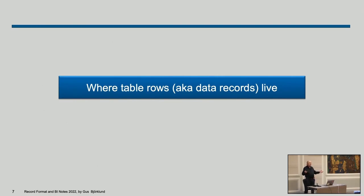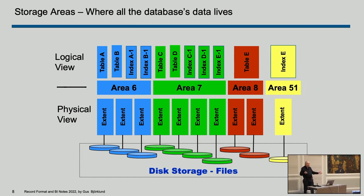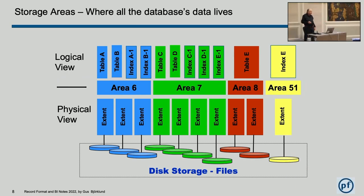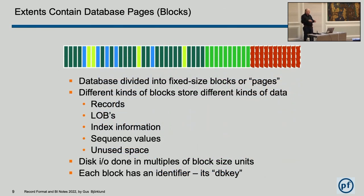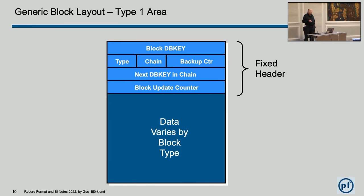Since we're going to talk about records, record formats, how they're stored, and how the before image log is affected by what goes on with records, we start at a high level. So where do we put records? We put them in storage areas, and storage areas are made up of extents. An extent is divided up into blocks. There's a bunch of different block types internally for different kinds of data. Here's a generic block — it has a header that's the same in every block. The first 16 bytes in a type one storage area is where the header is.